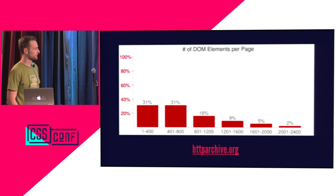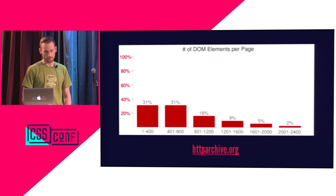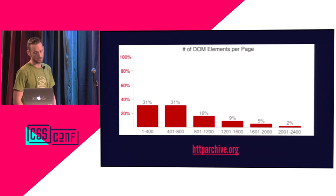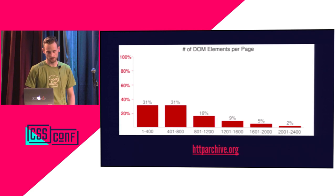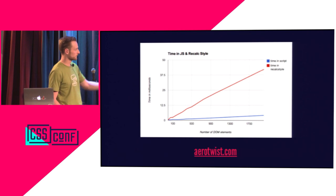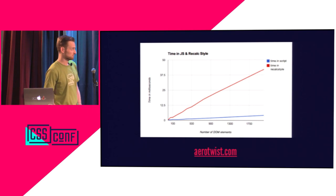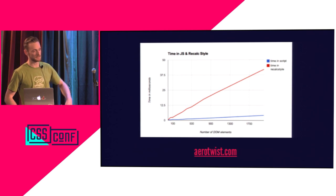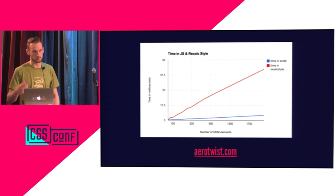This data is from HTTP Archive, where they've tested a whole bunch of the top Alexa-ranked websites, and you can see almost 50% have between 400 and 1,200 elements on the page. Looking back at that graph, there's about 10 to 20 milliseconds that can happen based on how many elements you have on the page — that's how hard the browser has to work to figure out new stuff when it changes.